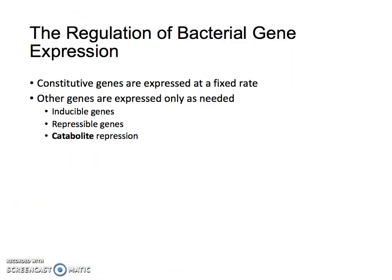The regulation of bacterial gene expression is complex. You have constitutive genes that are expressed at a fixed rate — these are genes for glycolysis needed for normal functioning of the microorganism. Other genes are expressed only as needed. So you have inducible, repressible, and catabolite repression. You are expected to know what inducible, repressible, and catabolite repression are.